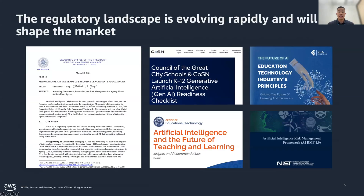As AI continues to be top of mind for customers, one key trend is that governments and education institutions are finally starting to catch up on Gen AI. They are issuing policies and guidance on how AI can be used in high-stake domains like education and government. These policies are likely to guide buying decisions and force more EdTechs and other government techs to align their solutions with them.